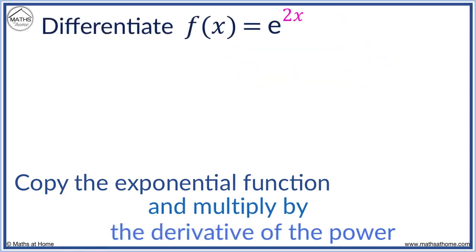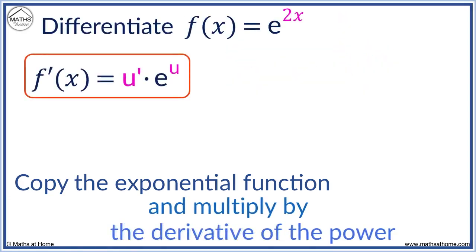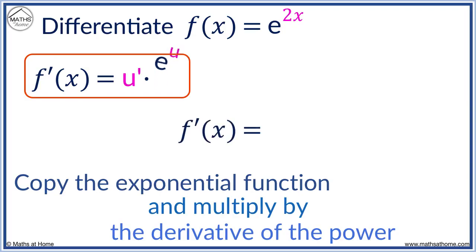For example, differentiate e to the 2x. Here, e to the u is e to the 2x. We copy this exponential function. Now, we multiply this by the derivative of the power. So, we differentiate 2x to get 2. Our answer is f dash x equals 2e to the 2x.